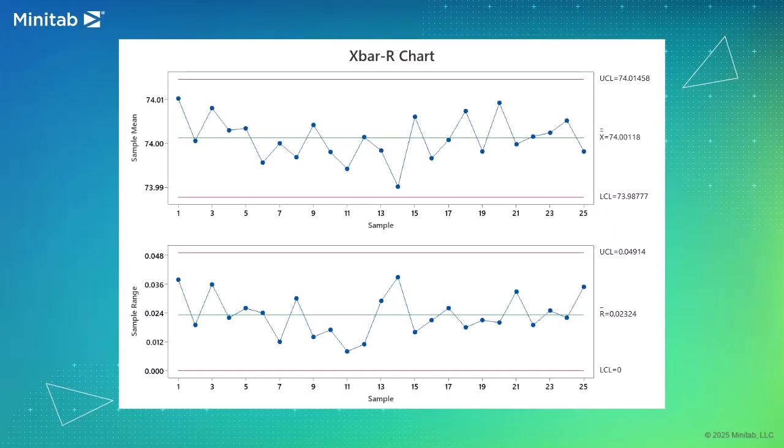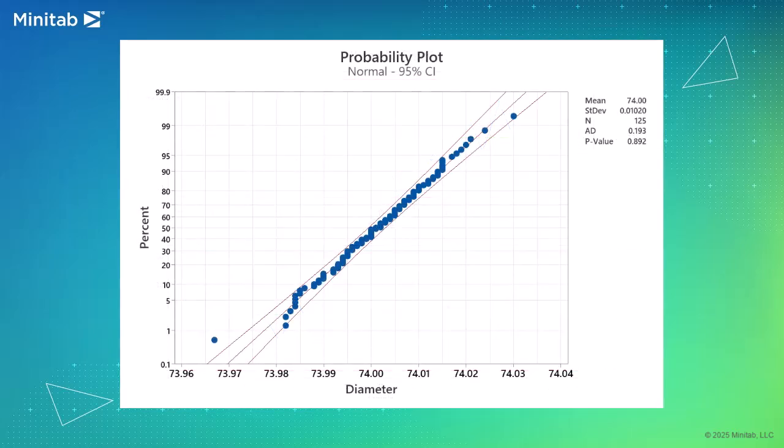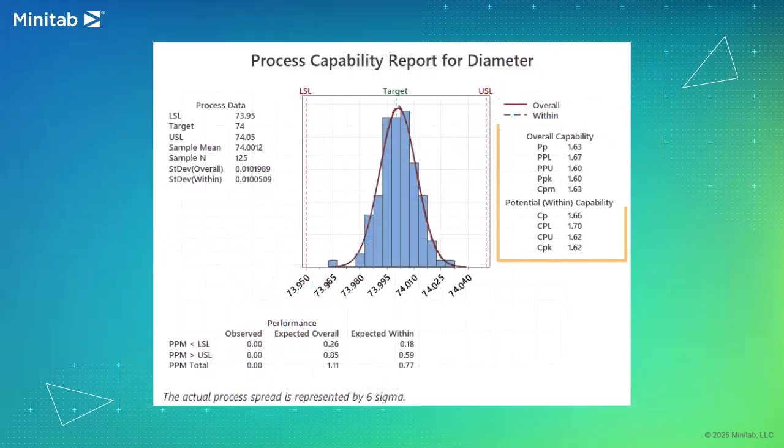It is important that your process is stable and in control before you assess capability. It is also important that your process data follow the expected distribution to ensure accurate capability metrics.